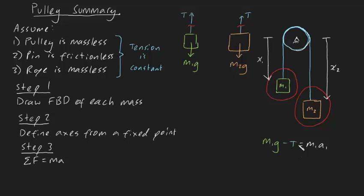Now let's apply the same formula to this larger block. Well, because downwards is considered positive, it's the same story. It will be m2g minus T is going to be equal to m2a2.